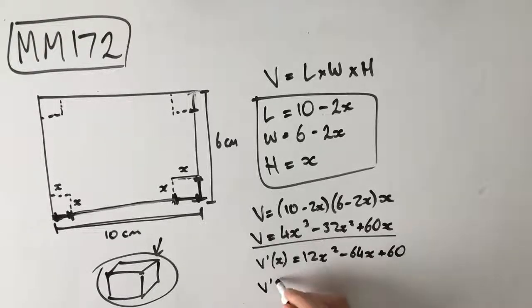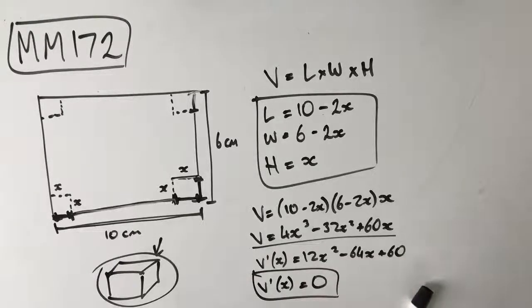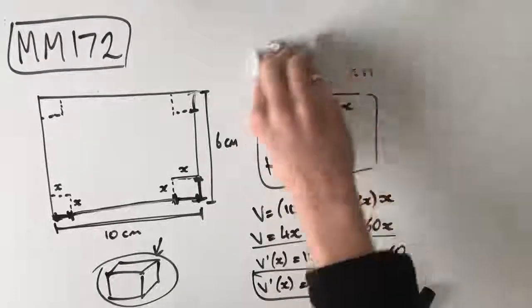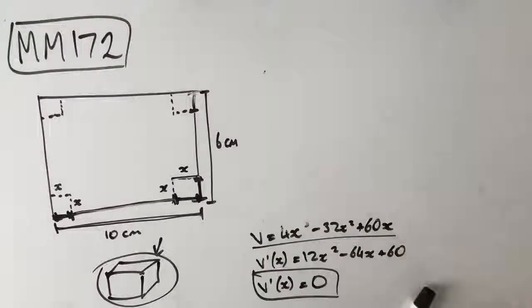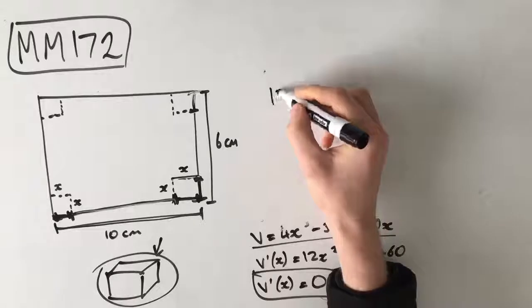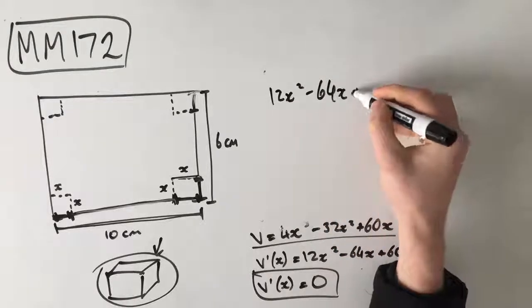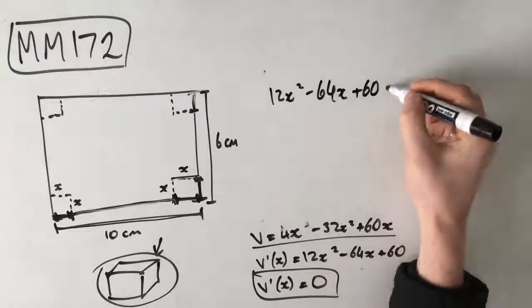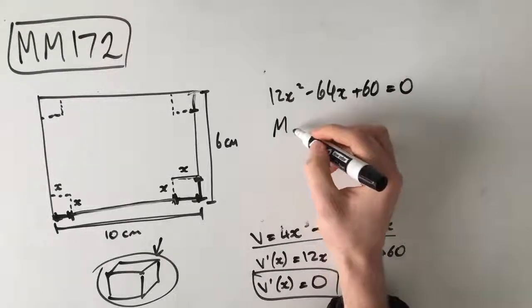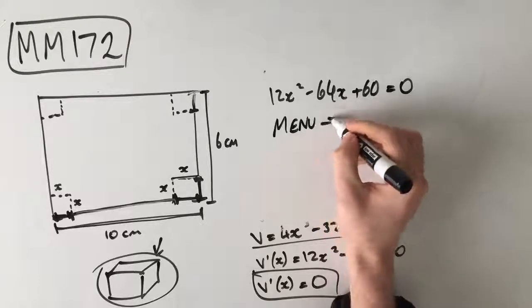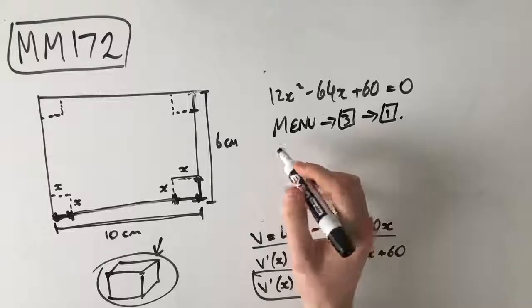Now, we want to let v dash of x equal 0 to find where the maximum or the stationary point is. And so what we're going to do is we're just going to plug this into our calculator, because we can. And why wouldn't we? Which means that 12x squared, take 64x, plus 60. So that's v dash of x is equal to 0. Put this in your calculator. Menu 3, 1 is your solve. And that will spit out...